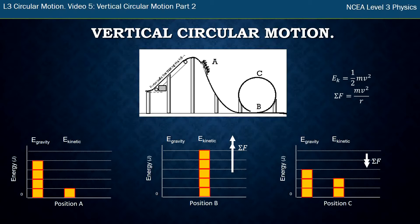Oh I see, there's no gravitational energy in position B. Oh, some of that gravitational energy has come back in position C, but we've lost that amount of kinetic energy to make that happen.